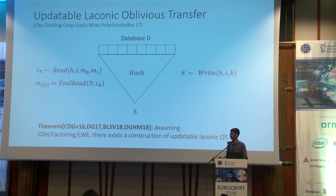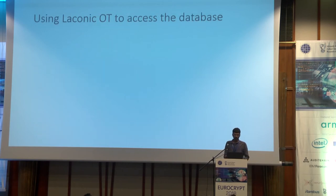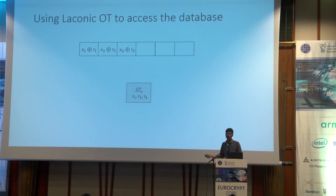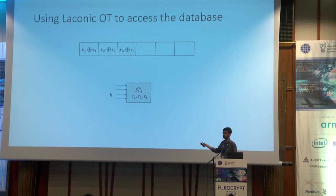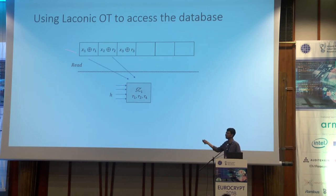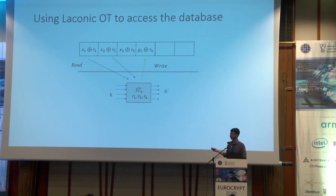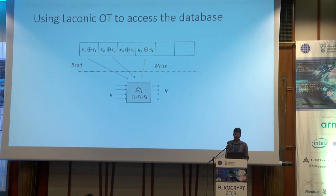The write algorithm takes a hash value h, a location i, and a bit b to be written, and outputs an updated hash value h-prime — the hash of the database with location i overwritten by bit b. A sequence of works showed how to construct an updatable laconic oblivious transfer from CDH, factoring, or LWE. The step circuit takes the initial hash as input, reads two locations using the read function of the laconic OT, and writes to a location using the write function. The write function outputs an updated hash, which is passed to the next step circuit.